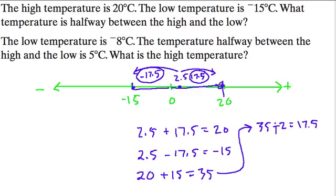So it tells us that if I start at 20 and I go down 17.5 degrees, that'll bring me to the halfway point. Or if I start at negative 15 and go up 17.5 degrees, that'll also bring me to the halfway point. So then we could say, well, 20 minus 17.5, that's 2.5. That's our halfway point.